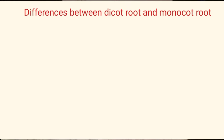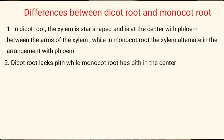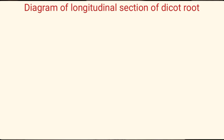Now we need to compare and contrast the transverse section of a dicot root and a monocot root. Difference one: in the dicot root, the xylem is star-shaped and located at the center, with the phloem found between the arms of the xylem; while in the monocot root, the xylem alternates in arrangement with the phloem. Difference two: the dicot root lacks pith, while the monocot root has a pith in the center.